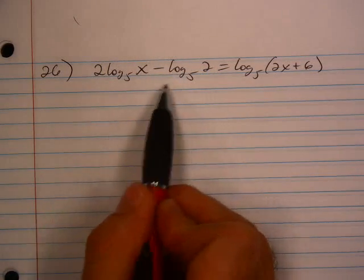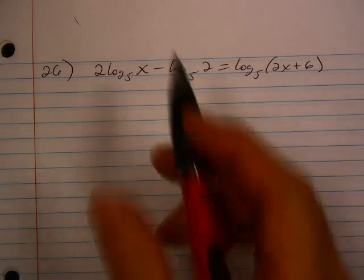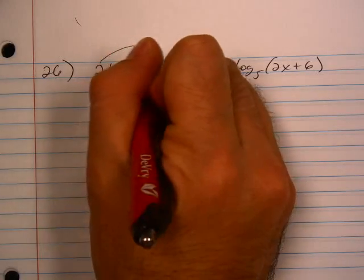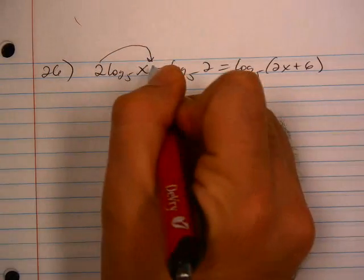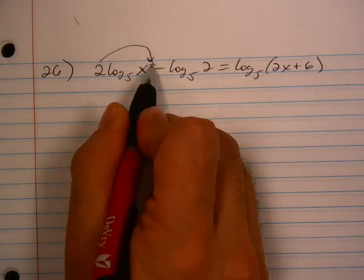We're going to take this side and we want to shrink it, condense it, and make that subtraction turn into a fraction. First things first, though, this two in front will end up as the exponent on the x. So that log base 5, that becomes x squared.